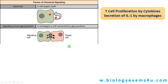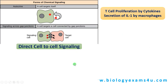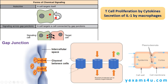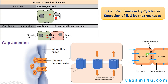The second type of signaling is called direct cell-to-cell signaling. This is through gap junctions in animals and plasmodesmata in plants. Gap junctions are also called communication junctions that allow passage of small molecules and ions between cells, thus maintaining intercellular communication. The same is the case with plasmodesmata in plants — these are fine cytoplasmic strands through which small molecules and ions can pass, maintaining intercellular communication between adjacent cells.